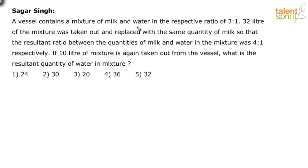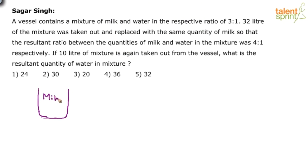A vessel contains a mixture of milk and water in the respective ratio of 3 is to 1. I am drawing a diagram here just for the sake of clear explanation, but you don't have to do that in the exam. The first vessel has got milk and water in the 3 is to 1 ratio.